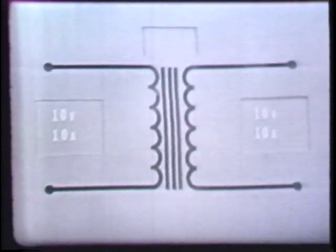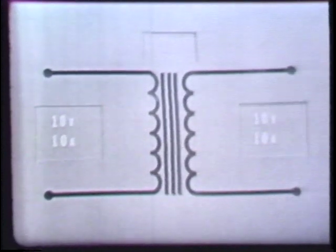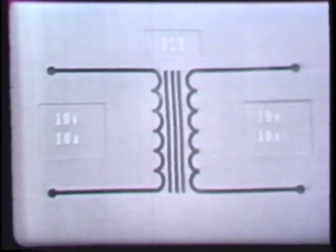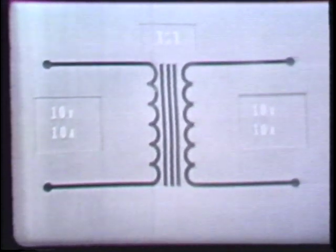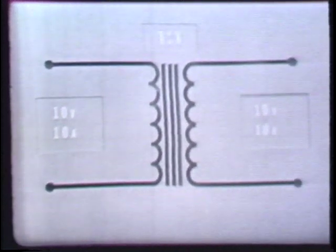Thus far, you've seen that if the secondary of a transformer has more turns than the primary, the voltage is stepped up. Whereas, if the secondary has fewer turns, the voltage is stepped down. Later, you'll see transformers in which the primary and secondary have the same number of turns. Such a transformer has a turns ratio of 1 to 1. Unlike the step-up and step-down transformer, a 1 to 1 transformer neither increases nor decreases voltage.